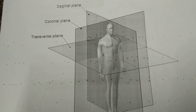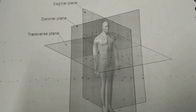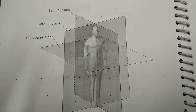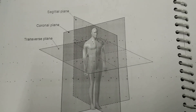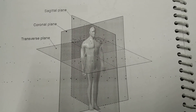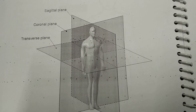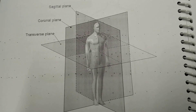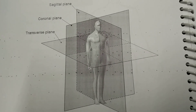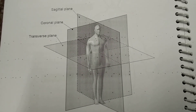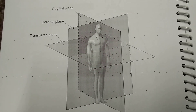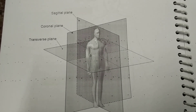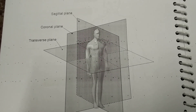In this video we studied the four basic planes of the human body. To summarize: the sagittal plane is a vertical plane which passes through the center of the body and divides the body into two equal halves — the right half and the left half. The coronal plane is perpendicular to the sagittal plane.